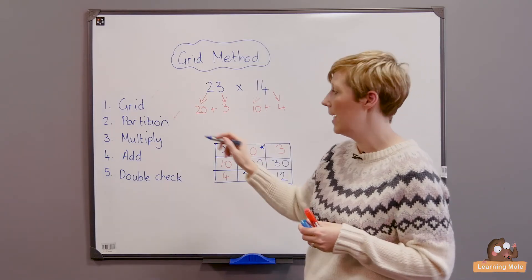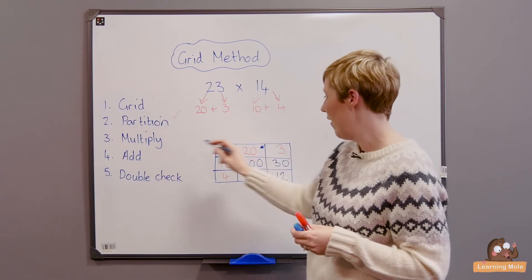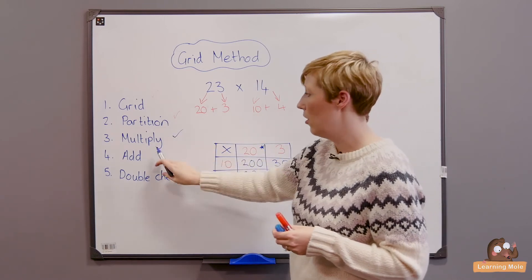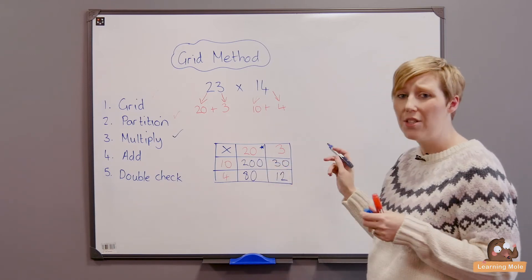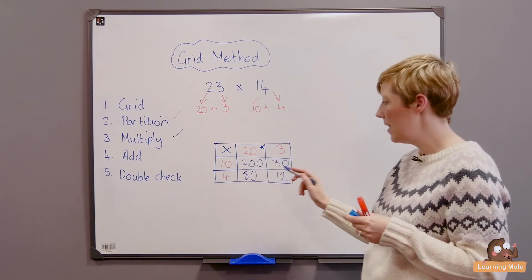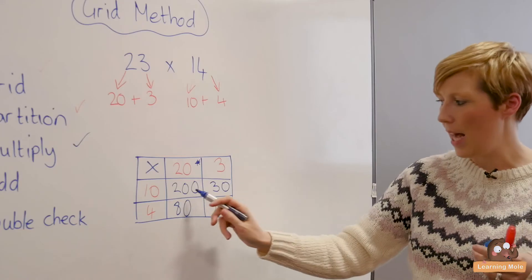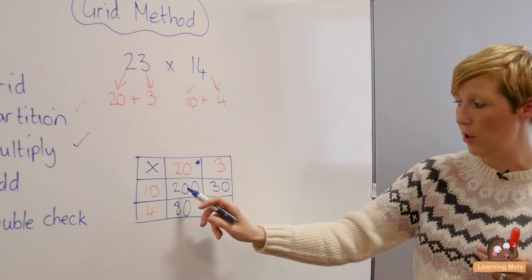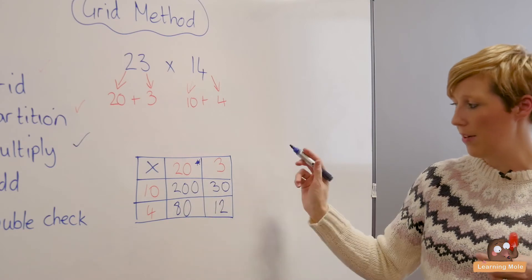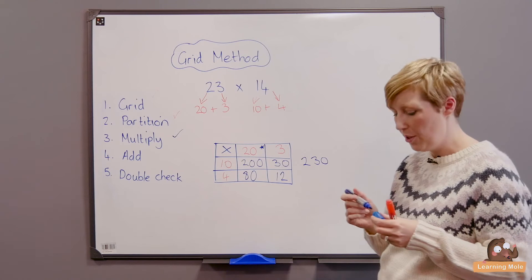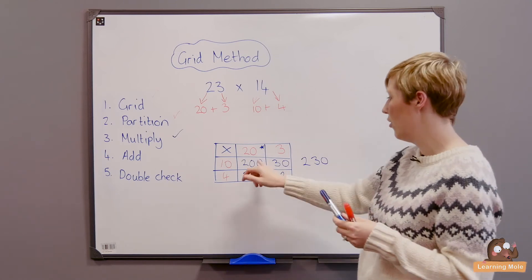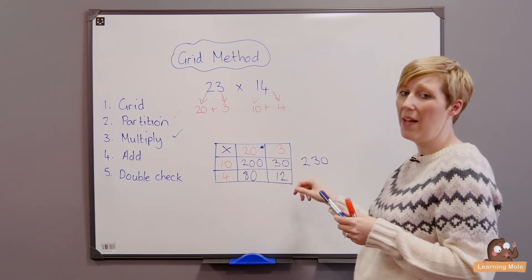So now I have drawn my grid, I've partitioned, I've multiplied, I'm now going to add. At this stage I would actually encourage children to use column addition for this because it really lends itself nicely to that. I would get them to pull the numbers out across. So 200 plus 30 is 230. They're not adding all four numbers—they can if they want to add 200 plus 30 plus 80 plus 12—but at this stage children would be more proficient and we'd be able to probably do this mentally.